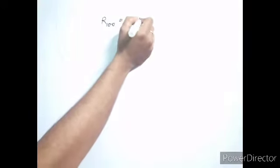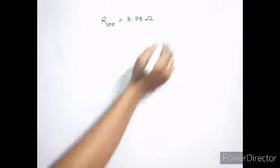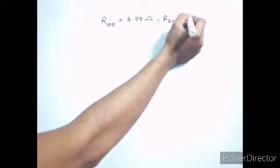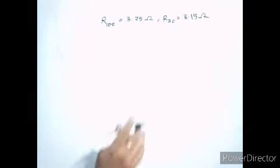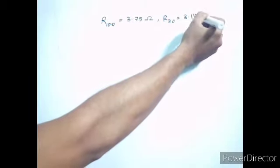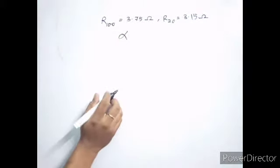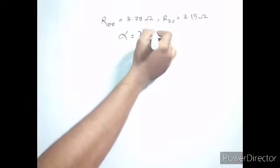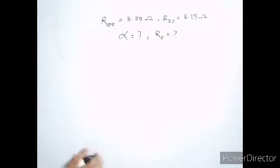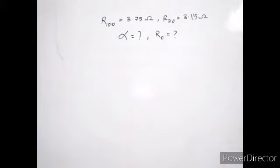Suppose we have been given the resistance of a certain material at 100 degrees Celsius, equal to 3.75 ohms, and the resistance at 20 degrees Celsius is equal to 3.15 ohms. Having both these values at two different temperatures, we need to calculate the temperature coefficient alpha and the resistance at 0 degrees Celsius.